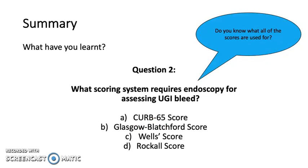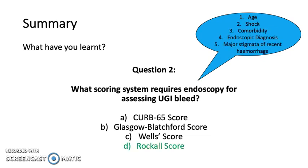What scoring system requires endoscopy for assessing a UGI bleed? Is it A. CURB-65, B. Glasgow Blatchford, C. Wells, or D. Rockall? The answer is D, Rockall score.